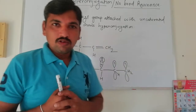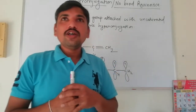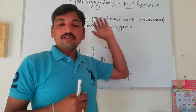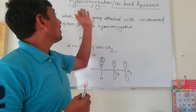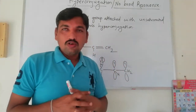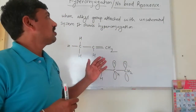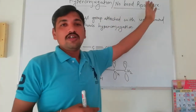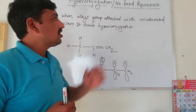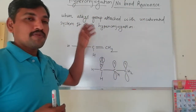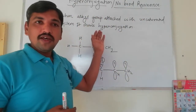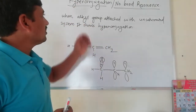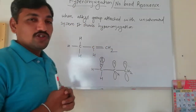Hello friend, good morning. Today we are going to discuss about the next topic, that is hyperconjugation. Hyperconjugation is also called as no bond resonance. This is the third type of effect after resonance effect and inductive effect — the next is hyperconjugation.